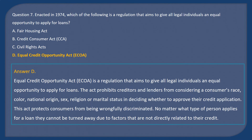Answer: D. The Equal Credit Opportunity Act is a regulation that aims to give all legal individuals an equal opportunity to apply for loans. The Act prohibits creditors and lenders from considering a consumer's race, color, national origin, sex, religion, or marital status in deciding whether to approve their credit application. No matter what type of person applies for a loan, they cannot be turned away due to factors not directly related to their credit.